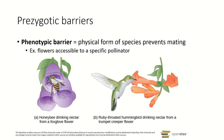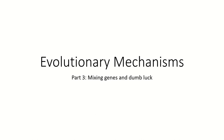Those are all of our prezygotic and postzygotic barriers creating reproductive isolation. In the next section, we're going to talk about some mechanisms that keep genes moving around among populations and that may help to separate populations.